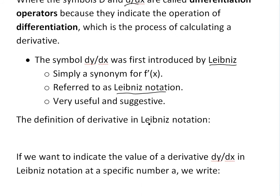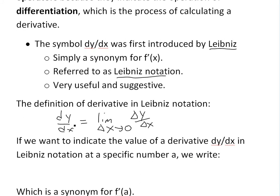The definition of the derivative, written in Leibniz notation, is dy over dx equals the limit as delta x approaches 0 of delta y over delta x. This is basically the slope as delta x goes to 0. It suggests that the derivative dy over dx — where d could be referred to as a very small delta — represents an infinitely small change in y divided by an infinitely small change in x, giving you the instantaneous slope. That's what I mean by suggestive — it just looks like it should be right.